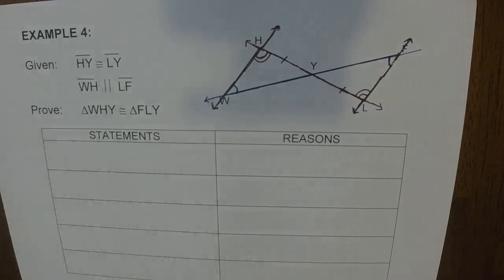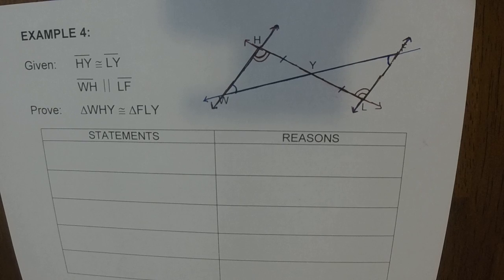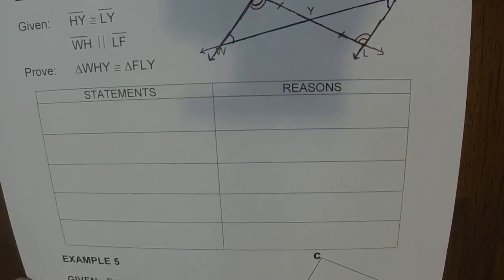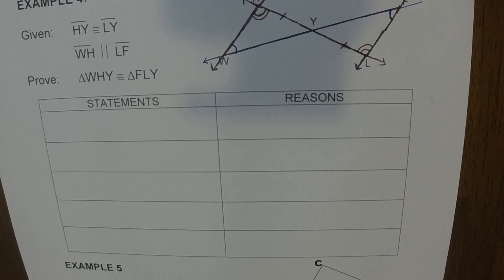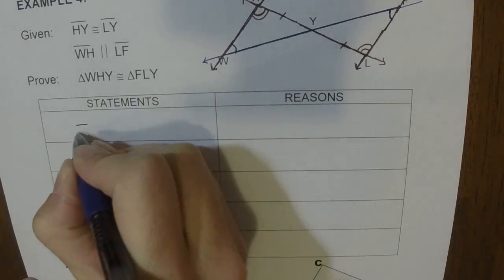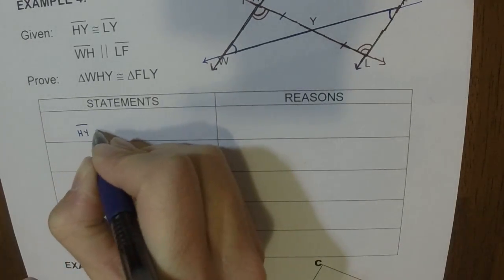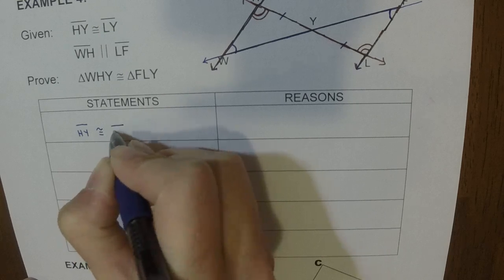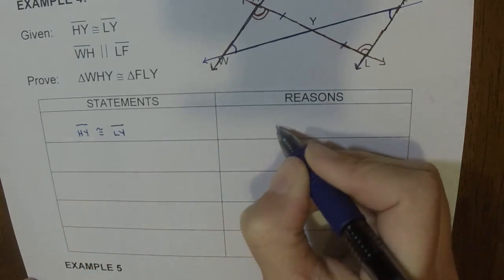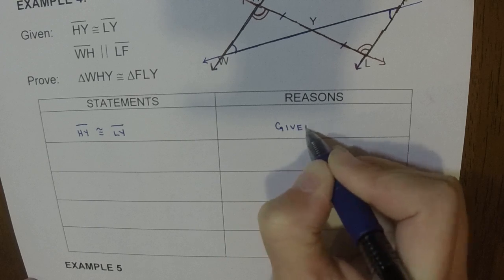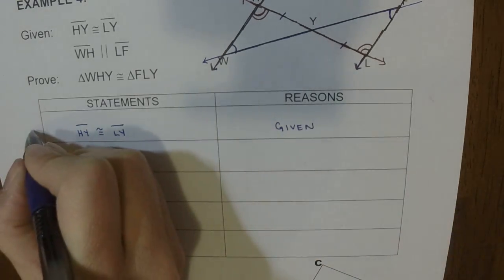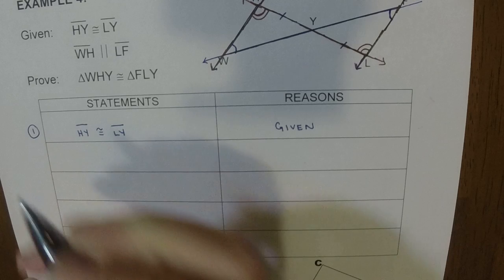So now let's see if we can kind of run through the proof, since we've already marked the picture. Okay, so our first box down here would be our first given. So we would say HY is congruent to LY. And again, our reason is given. Again, this is already a congruency, so I would put a 1.